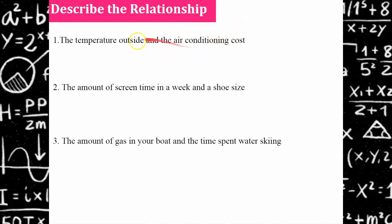Welcome back. So the temperature outside and the air conditioning cost would model a positive linear relationship. As the temperature outside would be increasing, the cost of air conditioning would be increasing.